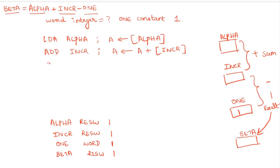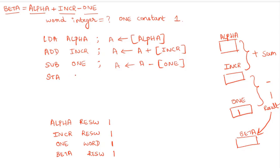Next we have to subtract 1. The sum is present in the accumulator, so we write SUB ONE. The accumulator contents are subtracted by 1. Then the result must be stored in memory location beta, so we write STA beta — the memory location beta will be loaded with the value contained in the accumulator.